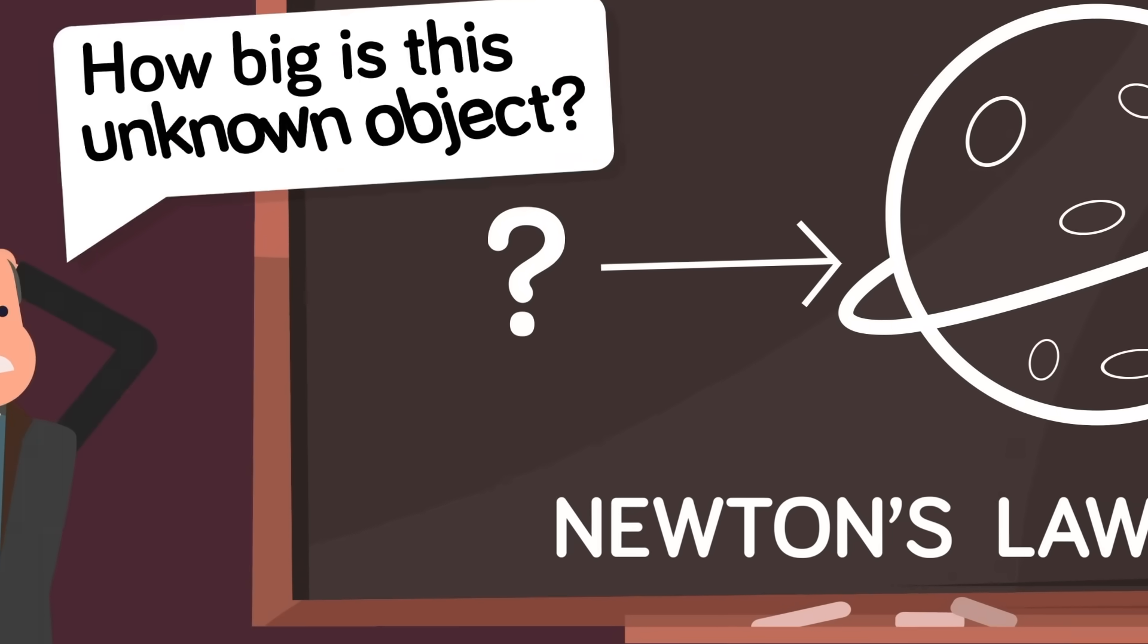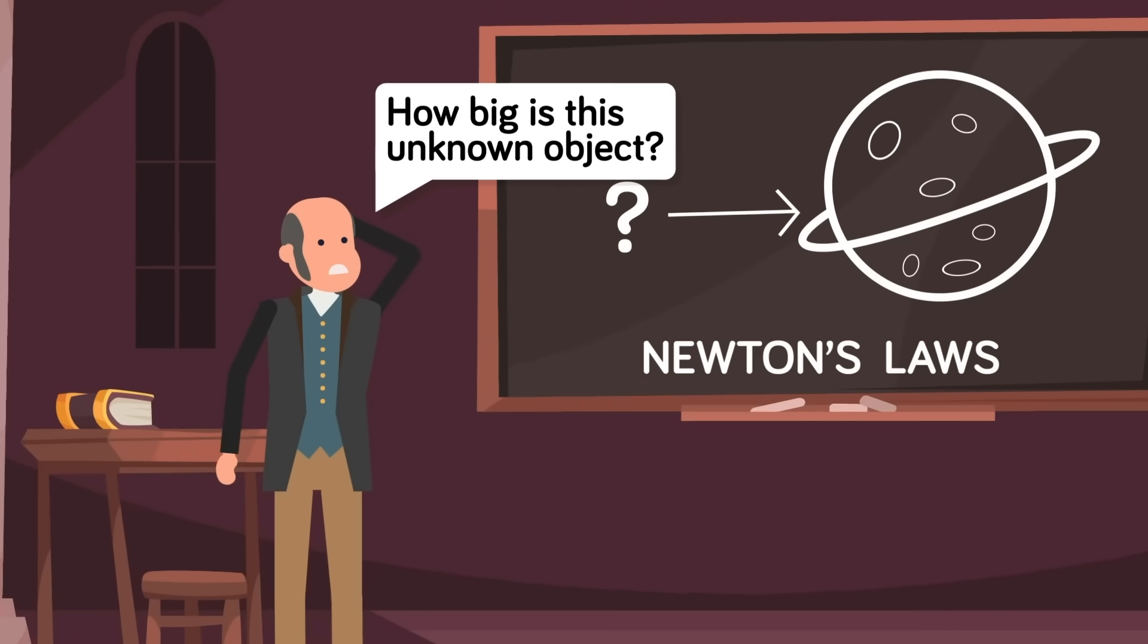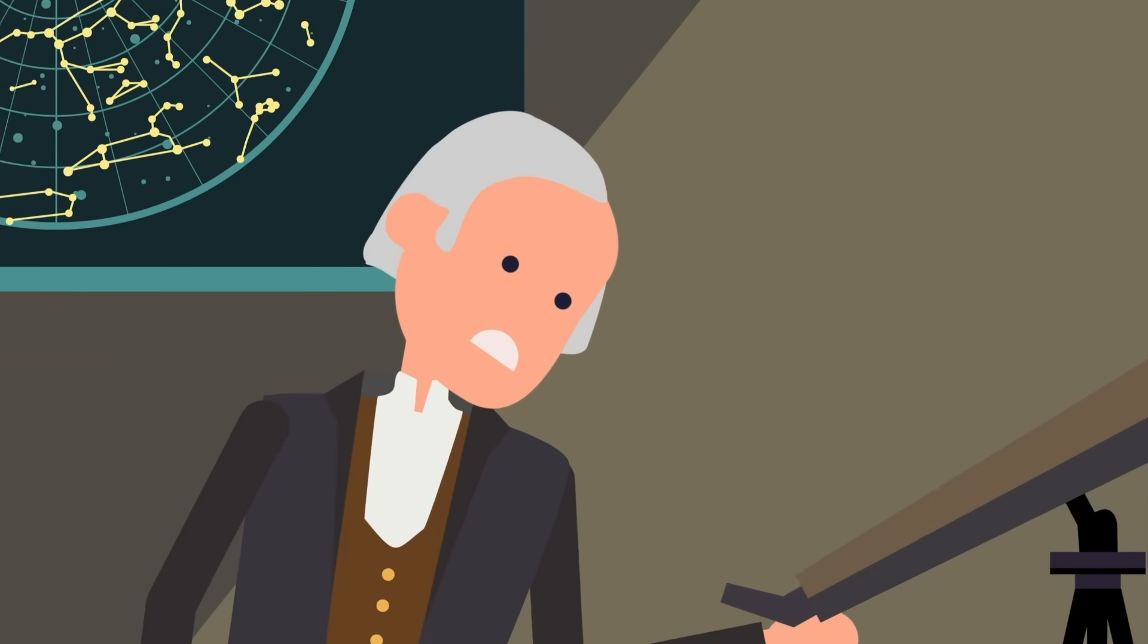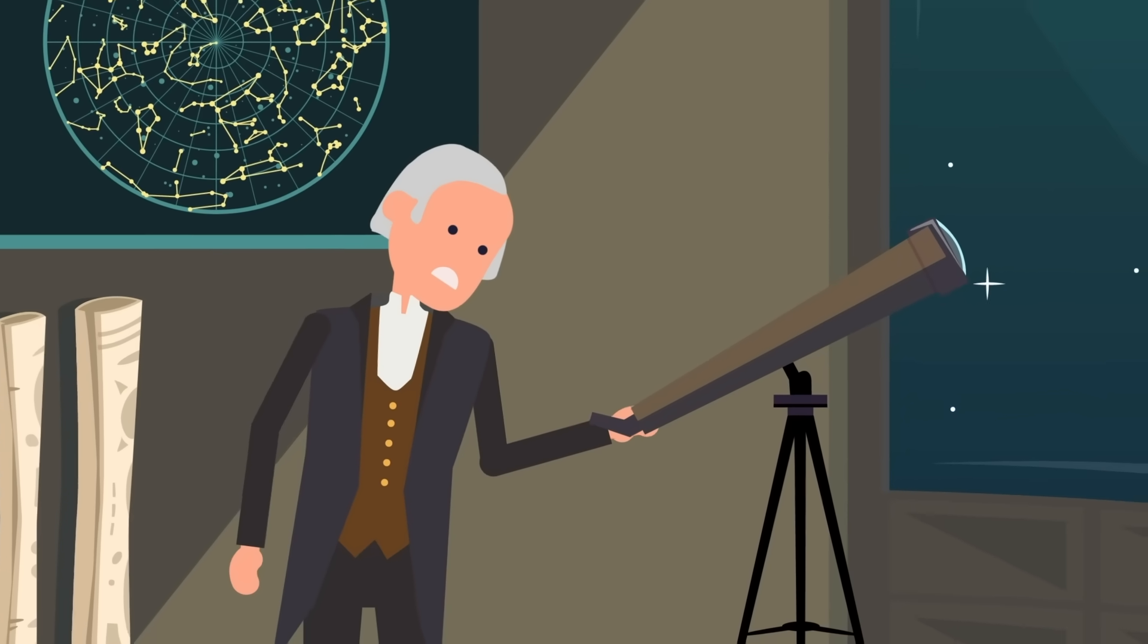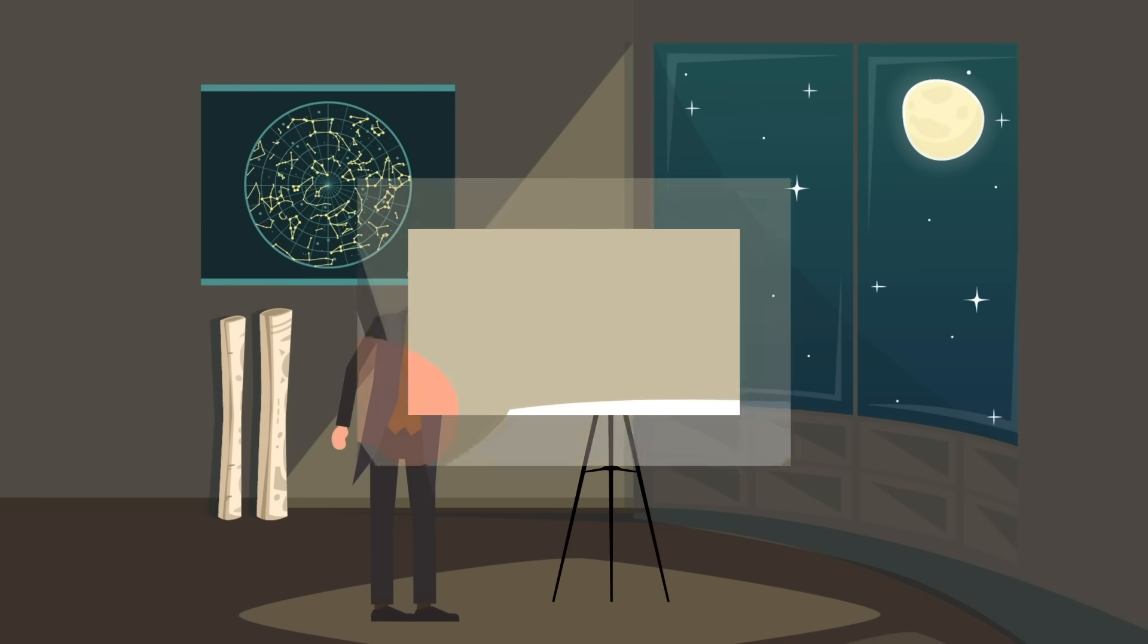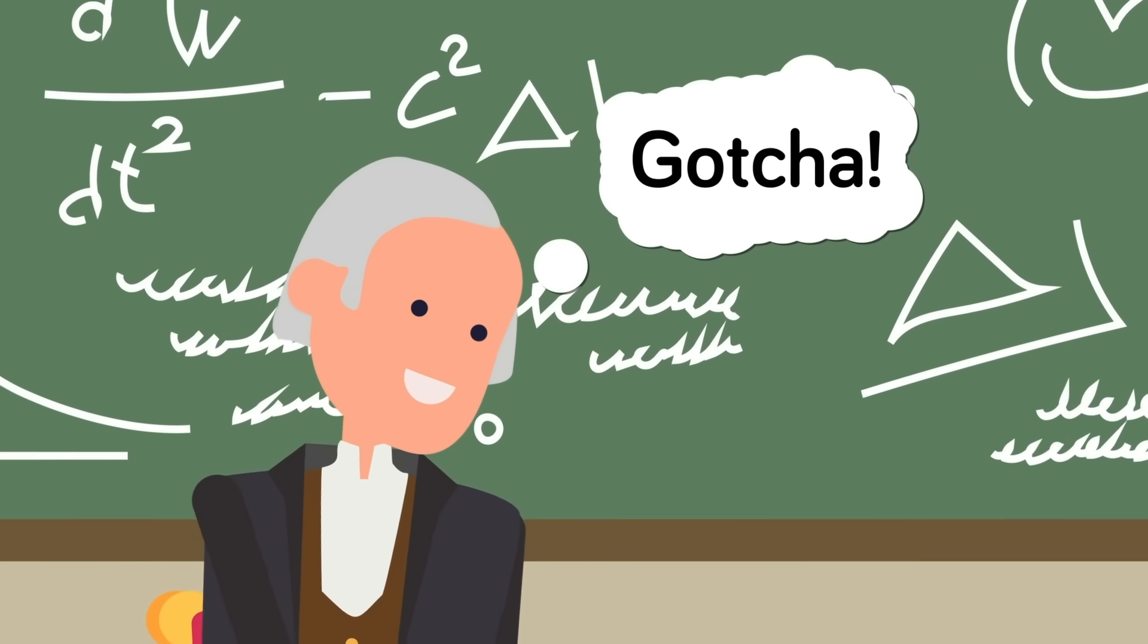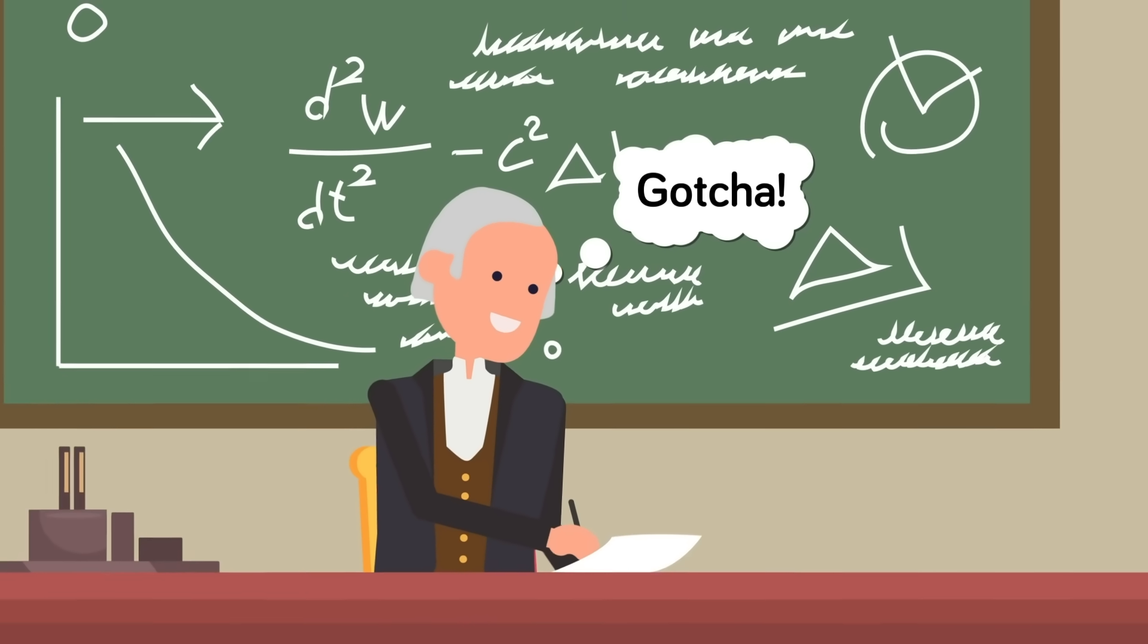He aimed to accurately deduce exactly how big this perturbing object was and where it could finally be directly observed. Parallel to Adams, though, French astronomer and mathematician Urbain-Jean-Joseph Le Verrier was also working on this perturbation problem plaguing Uranus. Independent of Adams' work, he would give the location of Neptune down to a single degree of where it would eventually be discovered.